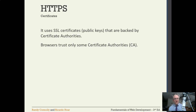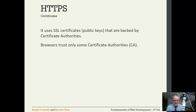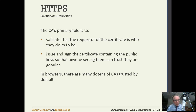HTTPS makes use of things called certificates. This is part of a public-private key mechanism, which is how HTTPS works. These certificates are backed by a third party — certificate authorities, or CAs. Your browser has a list of trusted CAs. The certificate authority's role is to validate that the certificate is from someone who is who they claim to be. The CA also issues and signs the certificate, and puts in the public keys so that anyone seeing them can trust that these are genuine.